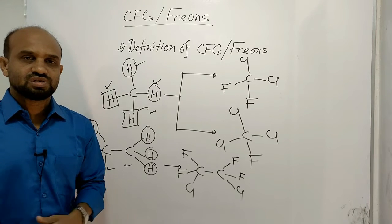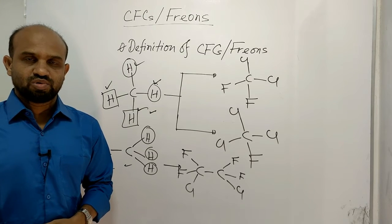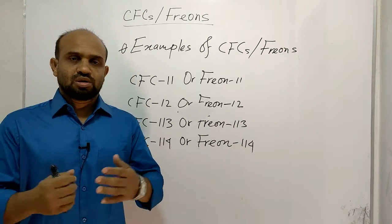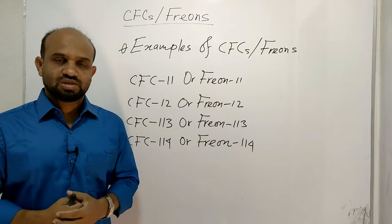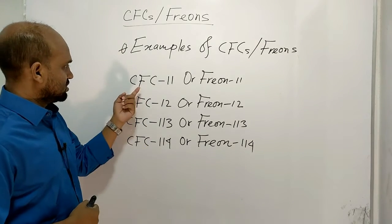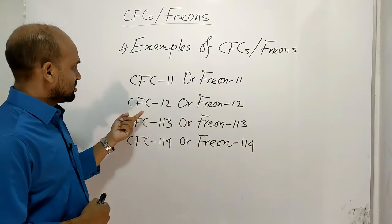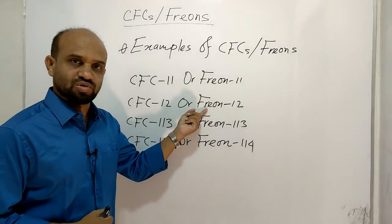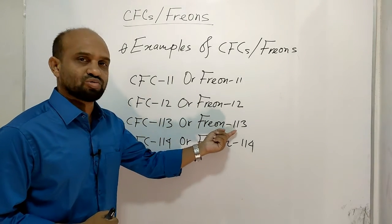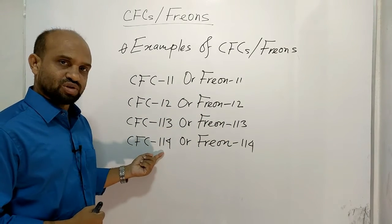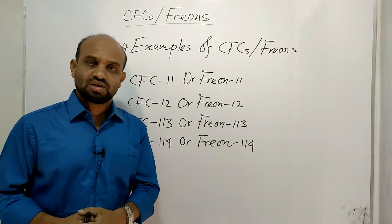So the definition: the chlorofluorocarbon derivatives of methane and ethane are called CFCs. Commercially, CFCs are called Freons. Some examples of CFCs or Freons are: CFC-11 or Freon-11, CFC-12 or Freon-12, CFC-113 or Freon-113, and CFC-114 or Freon-114.